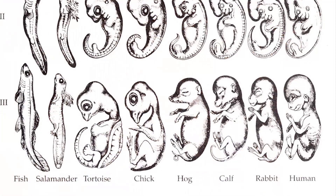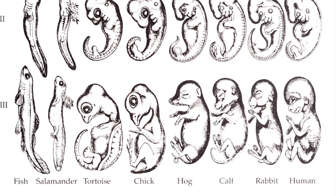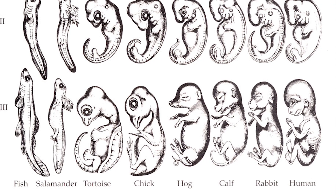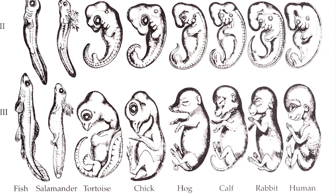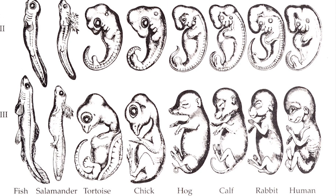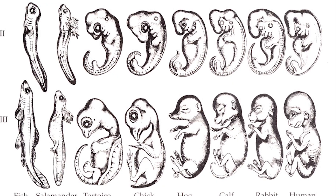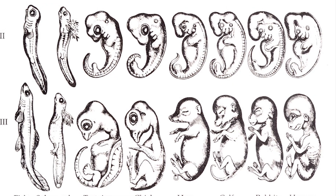Now, in order to prove this theory of his, he made several drawings of the different stages of different animals — a dog, a pig, a human, a chicken, a turtle, a salamander. But when he published these drawings, other professors started looking at him and saying, 'Haeckel, where did you get these?'